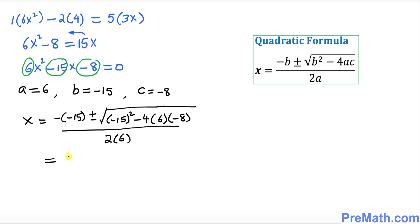Let's simplify this one. So we simply got negative and negative become positive 15 plus minus. Negative 15 squared is going to be simply 225, and when you multiply these one that's gonna give you positive 192, and everything is divided by 6 times 2 is 12.